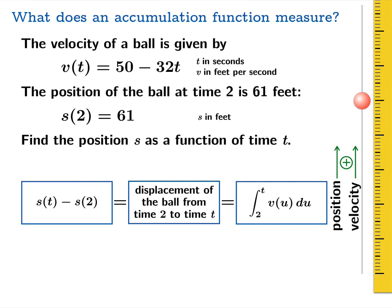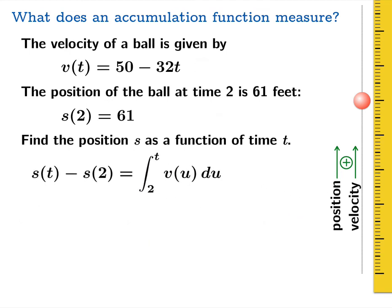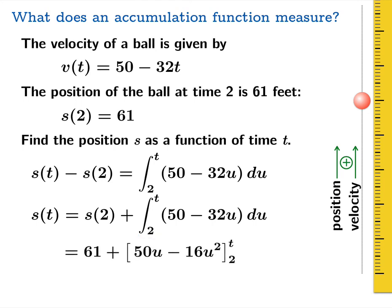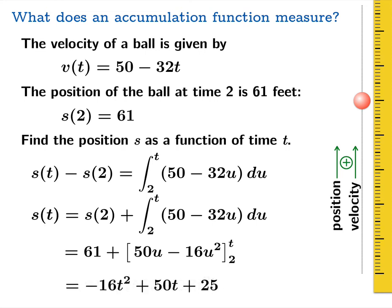Of course, we're calculating an accumulation function here. An accumulation function is essentially allowing us to write down a solution directly: since s(t) minus s(2) equals the integral from 2 to t of the velocity, we can just solve for s(t). This is our position function. To make it more explicit, we substitute s(2) equals 61 and evaluate the definite integral using the fundamental theorem, and in the end we get the function negative 16t squared plus 50t plus 25.